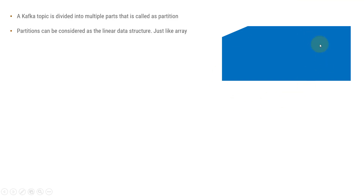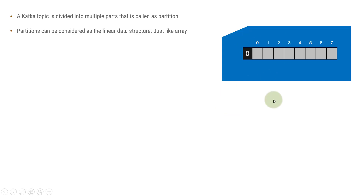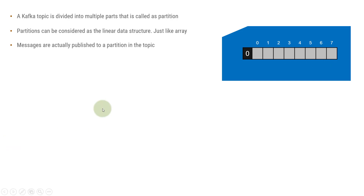Let's say this is a topic — I'm representing it with this structure. So this is a topic and this is the partition. Inside a topic, you have an array-like data structure, and this array-like data structure is called the topic partition.